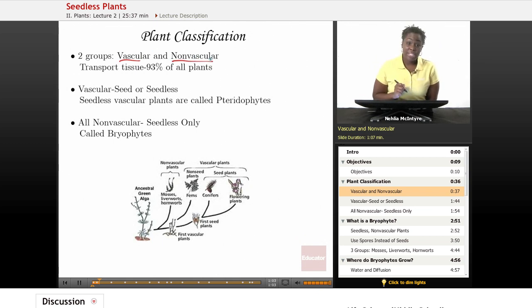Vascular plants have vascular tissue inside of their roots, stems, and leaves. And that vascular tissue transports all the water, nutrients, and food that the plant needs in order to survive.